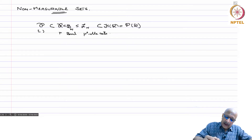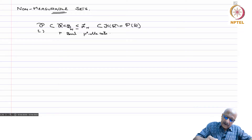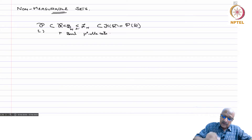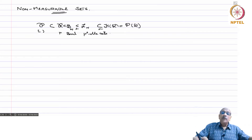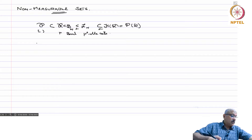I gave you an indirect argument using cardinality that the inclusion of Borel sets in Lebesgue measurable sets is strict, and we will see in the next chapter a specific example. Now we want to show that the Lebesgue measurable sets are also a strict subset of the power set, namely that there exist subsets of R which are not Lebesgue measurable.